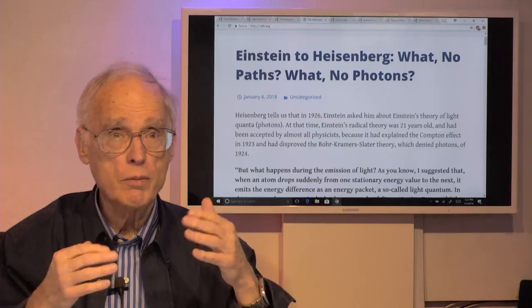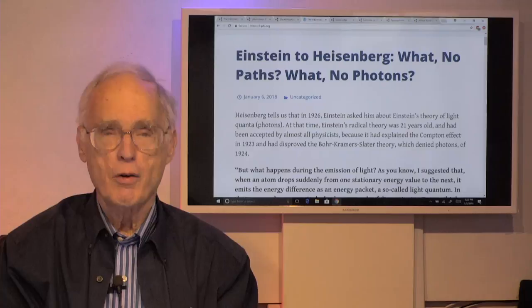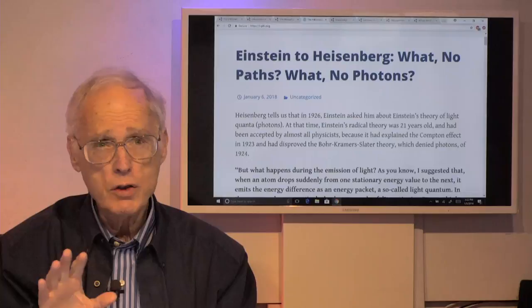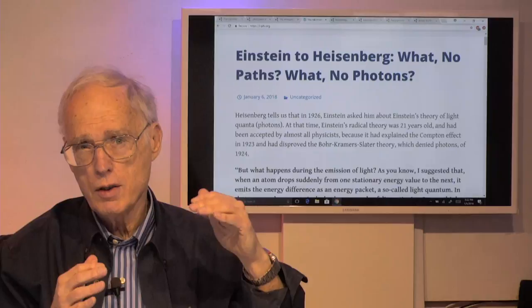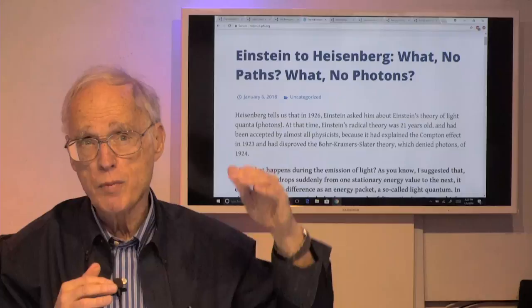Let's get back to our topic today. It's 1925-1926, and Werner Heisenberg has been working on a problem of describing the spectral line intensities — the emitted and absorbed energies when electrons jump up and down among the stationary states of the Bohr atom.